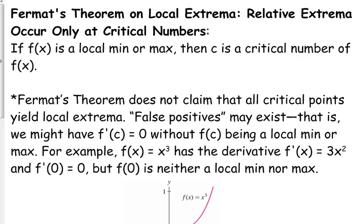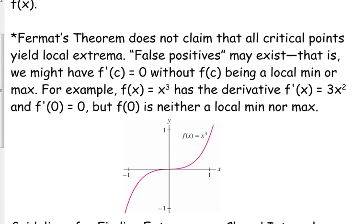Here's an example of that: x³. x³ has the derivative 3x², and 3x² equals zero at x equals zero. But if you look at the graph of x³, at x equals zero, that is not a maximum or minimum.